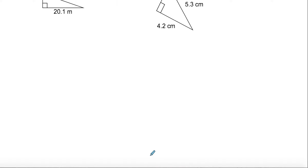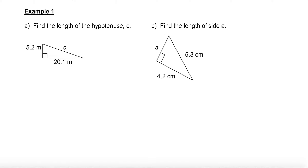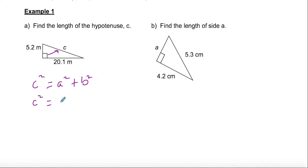When practicing the Pythagorean theorem, always write the formula down: c² = a² + b². In example one, identify the right angle — that side across from it is c. Sub in the known sides; it doesn't matter which leg is a or which is b since you're adding them. So: c² = 5.2² + 20.1². We're solving for the unknown length of side c.